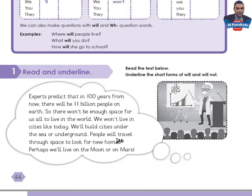'People will travel through space to look for new homes. Perhaps we will live on the moon or on Mars.' Now take your time to underline the short forms of 'will' and 'will not', then come back to check your answers.